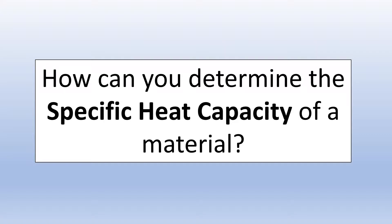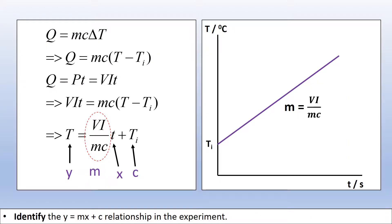In this video I'm going to look at how we can actually measure specific heat capacity of a material, using an electronic method. Let's start with our equation for specific heat capacity: Q equals MC delta T, where Q is your thermal energy, M is the mass of the object, C is the specific heat capacity, and delta T is the temperature change.